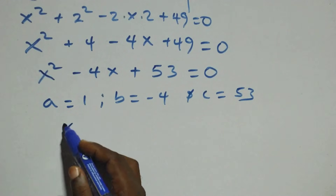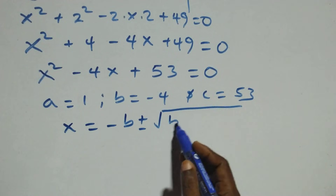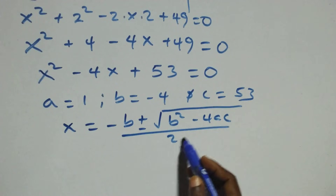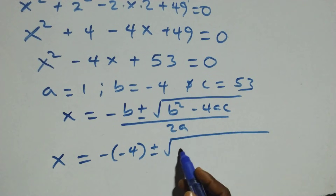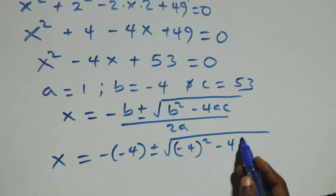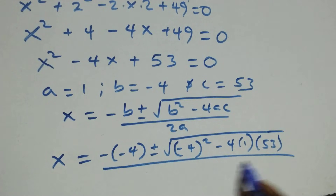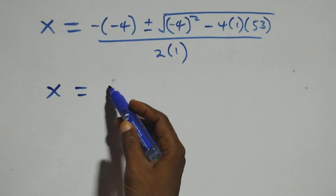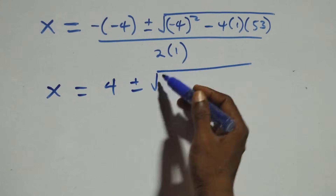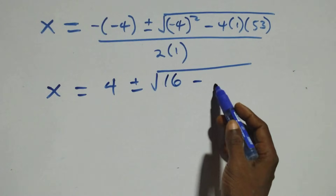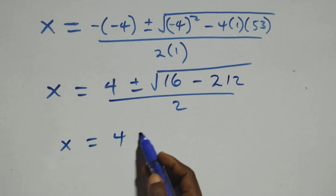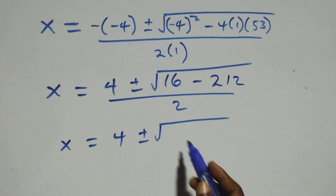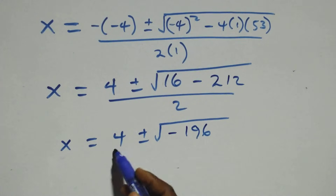Applying the quadratic formula x equals minus b plus or minus square root of b squared minus 4ac, all over 2a: we get x equals 4 plus or minus square root of 16 minus 4 times 1 times 53, over 2. This gives x equals 4 plus or minus square root of 16 minus 212, over 2, which is 4 plus or minus square root of minus 196, over 2.